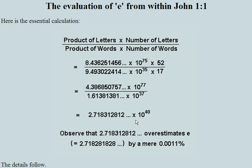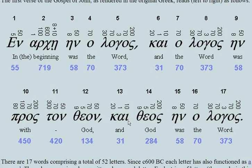Genesis 1:1 was written in the 14th century BC by Moses — he was obedient to God and wrote what God told him to write. There is truth in the statement that 'in the beginning God created his word, the heavens and the earth.' Then John, in 70 AD, was obedient to God and wrote 'in the beginning was the Word, and the Word was with God, and God was the Word.'